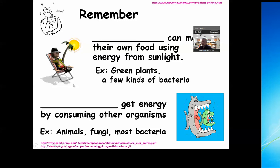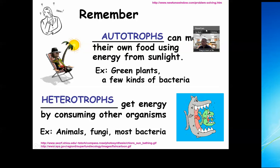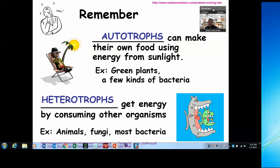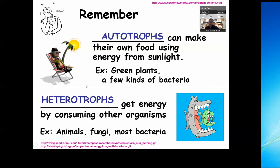We have to recognize that there are two types of organisms: ones that can use solar energy to produce organic compounds we call sugars and carbohydrates, and ones who get their energy by breaking down those sugars and carbohydrates by eating other organisms.